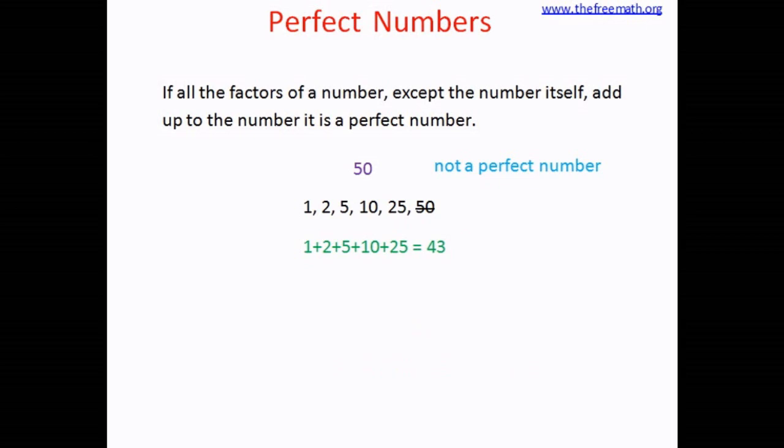So like this, if you keep on looking at factors of different numbers, you can check 80 or 100 or 200, and you will be surprised that the next perfect number is actually pretty big. It is 496. And the next perfect number, the one after 496, is even bigger. It is 8128. Wow, that's a big gap.